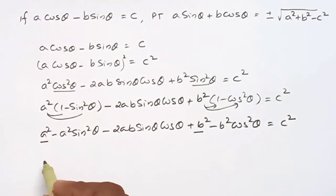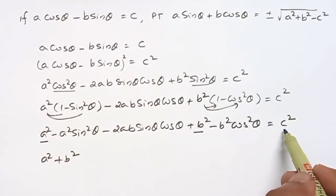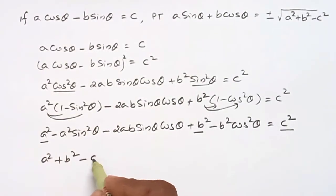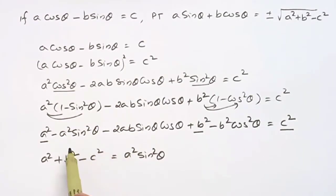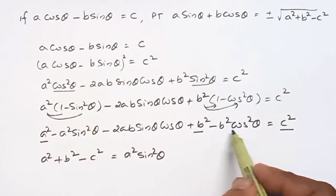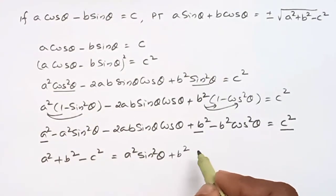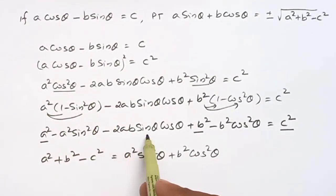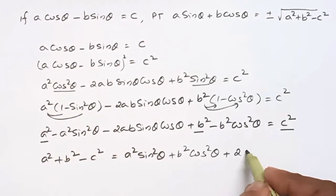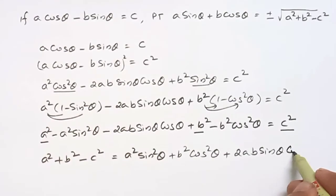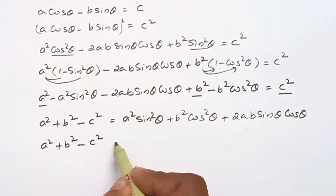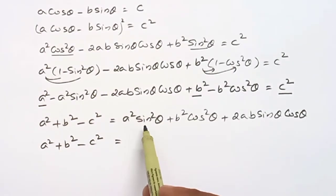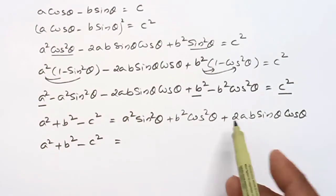Rearranging, A squared plus B squared minus C squared equals A squared sin squared theta plus 2AB sin theta cos theta plus B squared cos squared theta. This is in the form A squared plus 2AB plus B squared, that is, A plus B the whole square — so it equals A sin theta plus B cos theta, the whole square.